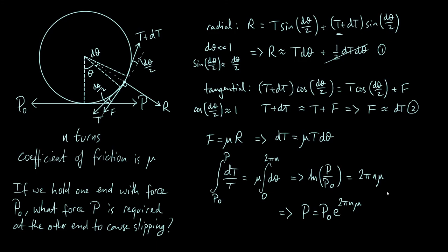So there you go — that's the capstan equation. Of course, the rope could stay in equilibrium if you applied a smaller force; this is the minimum force needed to cause slippage. I hope you found this interesting — I always like these problems where you split things into small elements. I'm planning to say more about this topic soon: I'll consider how to apply this equation to the problem of two masses hanging on either side of a pulley, and develop the model further to include the mass and weight of the string. Hope to see you again soon for more interesting physics problems.